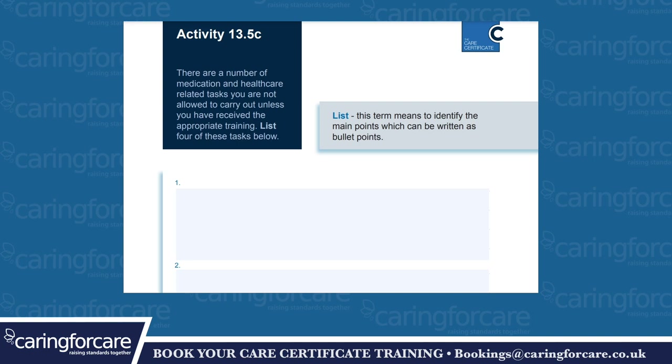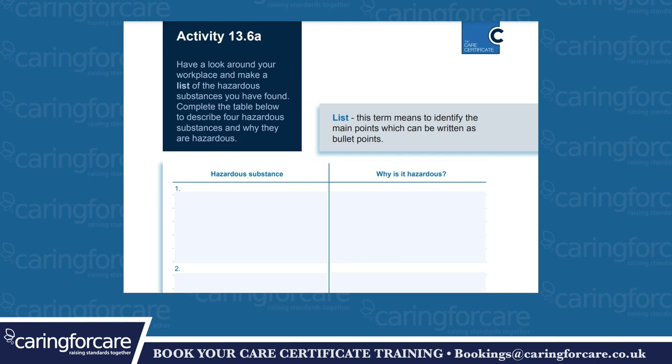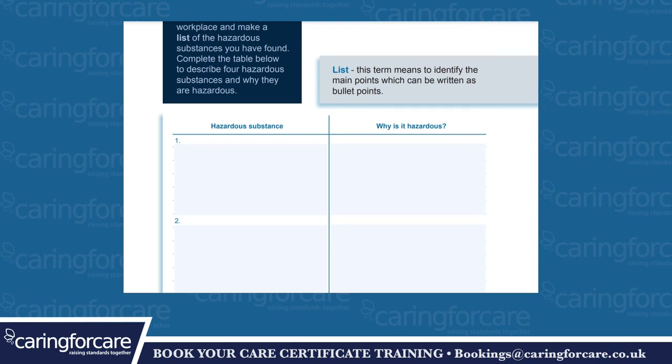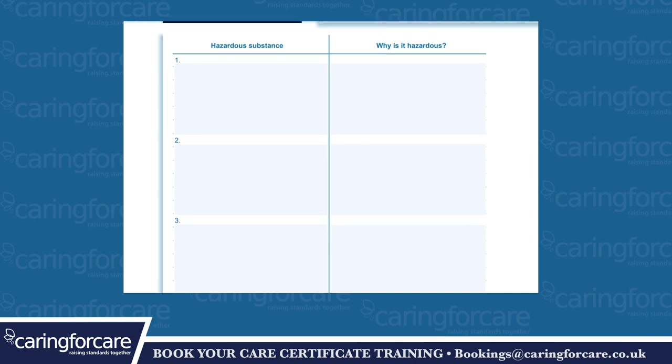Activity 13.5c: there are a number of medication and healthcare related tasks you are not allowed to carry out unless you have received the appropriate training. List four of these tasks below. To list means to identify the main points which can be written as bullet points. Activity 13.6a: have a look around your workplace and make a list of hazardous substances you have found. Complete the table below to describe four hazardous substances and why they are hazardous. Hazardous substance — why is it hazardous?